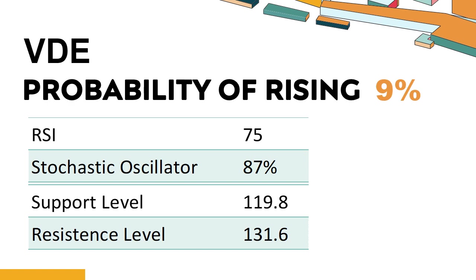Trend Outlook: VDE has a 9% probability of rising stock price. When the probability of rising is lower than 50%, the probability of falling is relatively high. Combining multiple technical analysis indicators, VDE has 5 bullish signals and 2 bearish signals. VDE's short-term support level is 123.6; if it falls below 123.6, it will have a chance to test 119.8. The short-term resistance level is 128.3; if it breaks through 128.3, it will look up to 131.6.